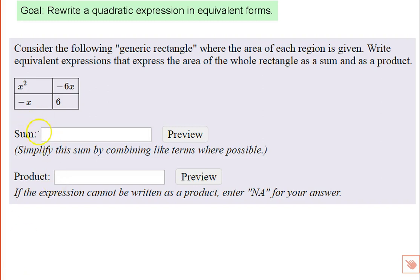So if I want to think about the sum, the area as a sum, I'm just going to take these four subregions and add them up. So I would have x squared minus 6x minus x and plus 6. I just combine them all by addition.